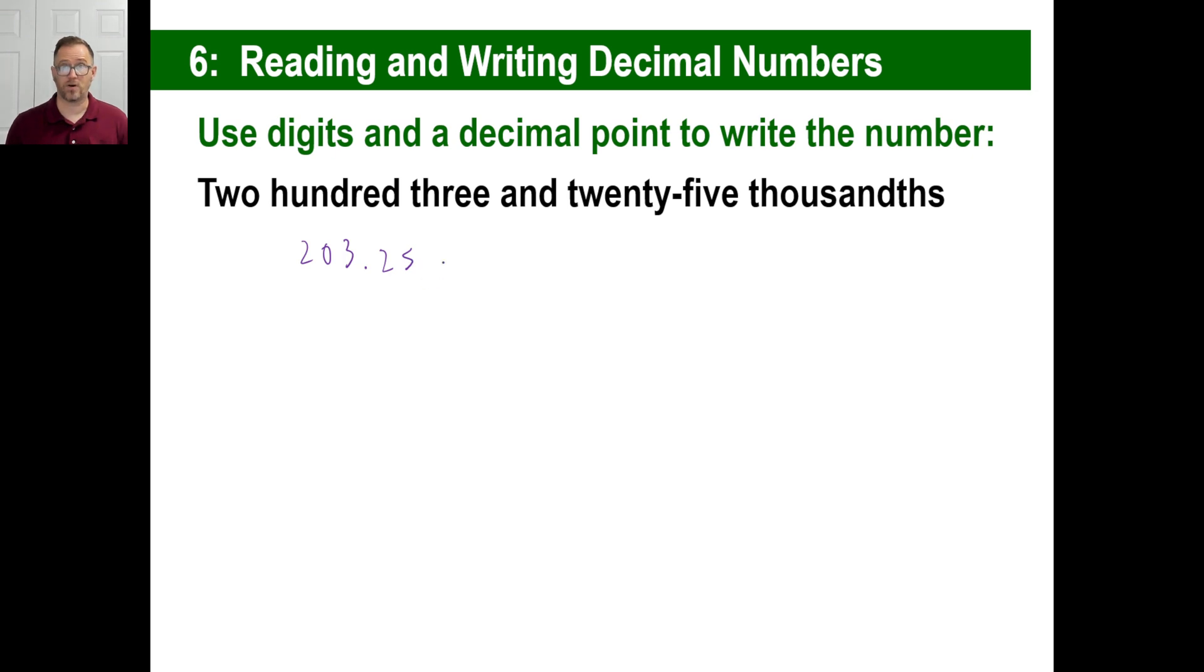You want 25 thousandths. One way to do this, if you're not sure, is to force yourself to count these things off by ten. That's my tenths, ten times ten is my hundredths, hundred times ten, that's my thousandths. 25 goes at the very end, so the five goes at the very end to the right. Then I have to put a zero there if there's nothing there. That's 203 and 25 thousandths.